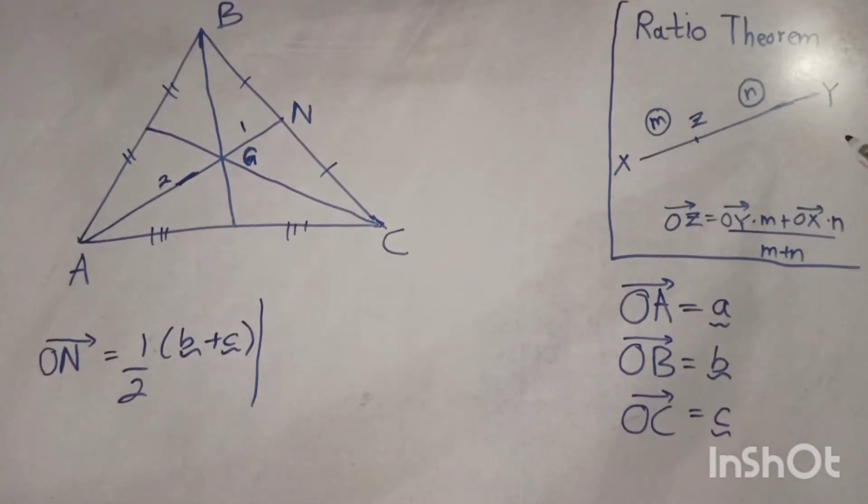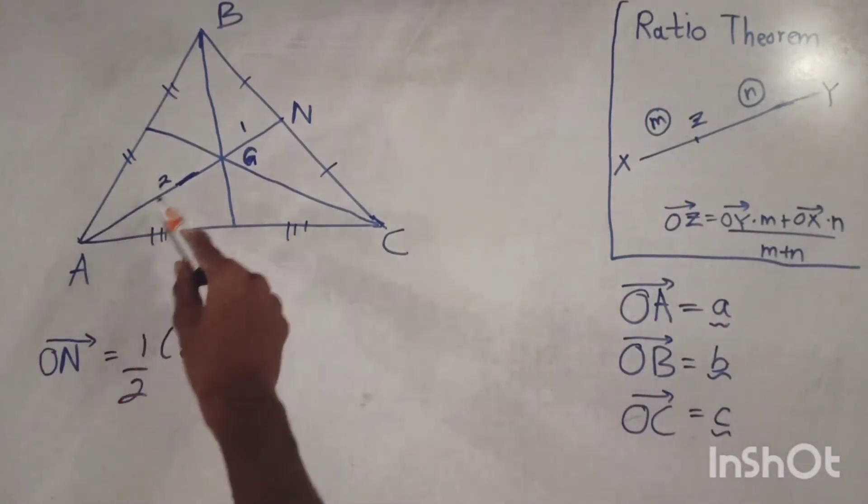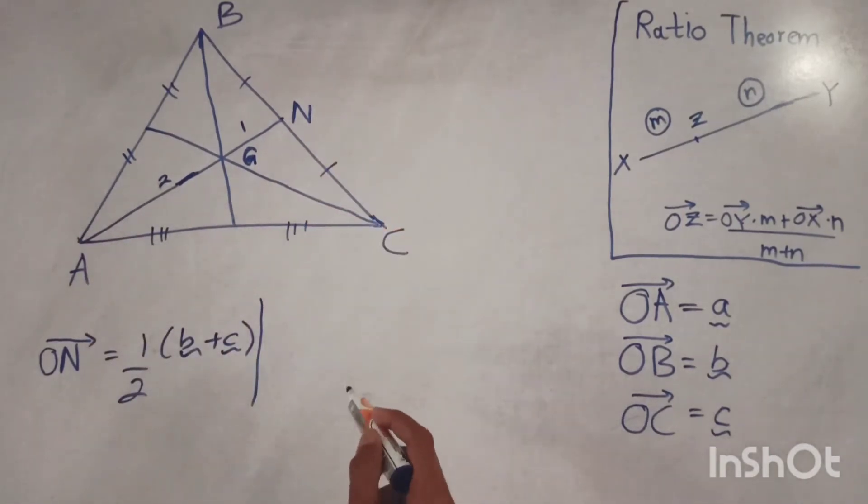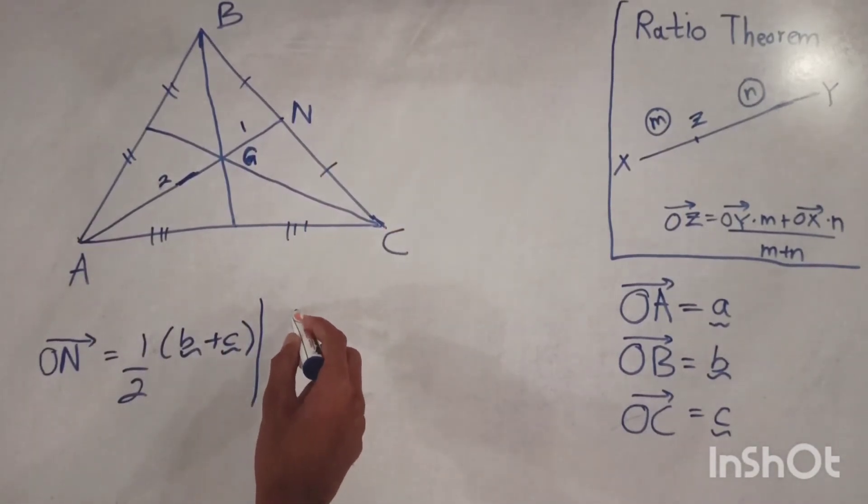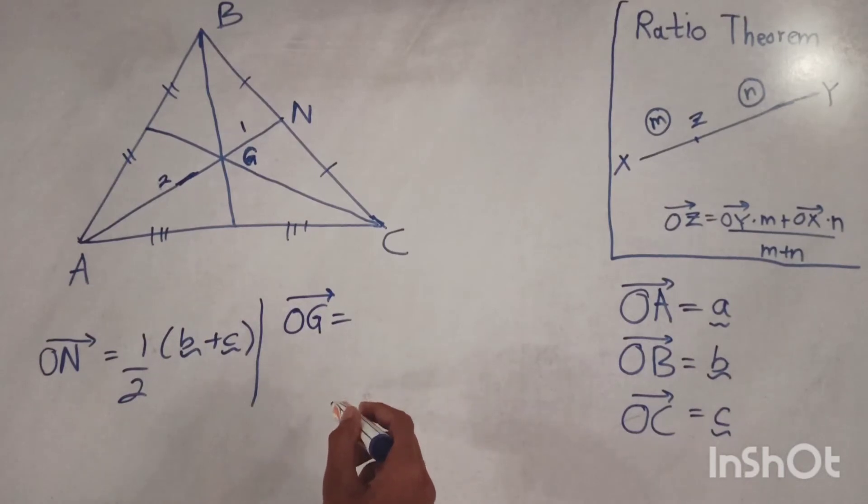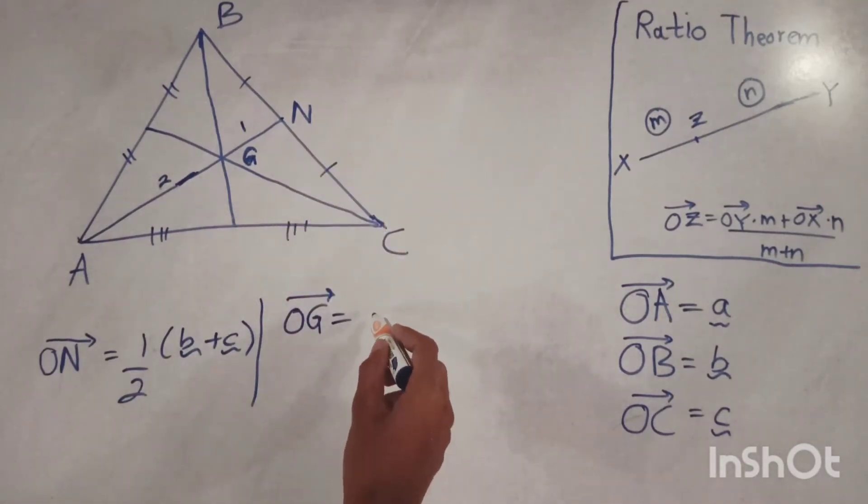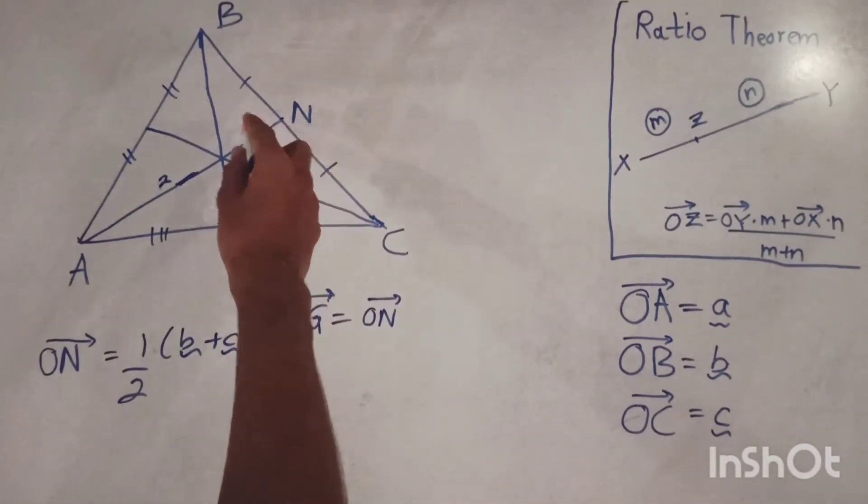Here we write OG. Then we can write the position vector ON times 2 plus position vector of A, vector OA times 1, divided by 2 plus 1.